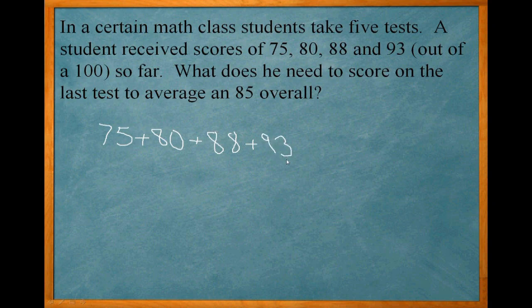Now what do we do with the fifth test score? We don't know what that score is. That's what we're trying to find. So anytime you have an unknown, we put in a variable for it. Let's just put in X.